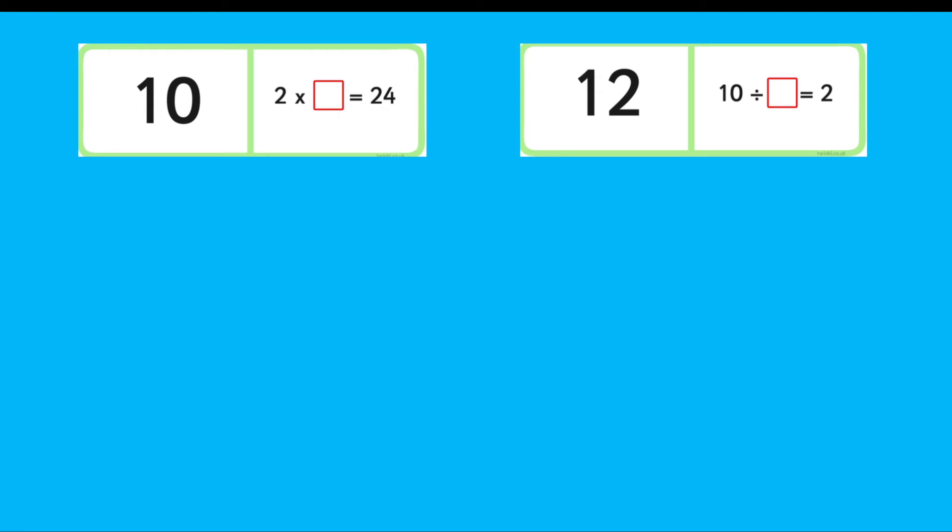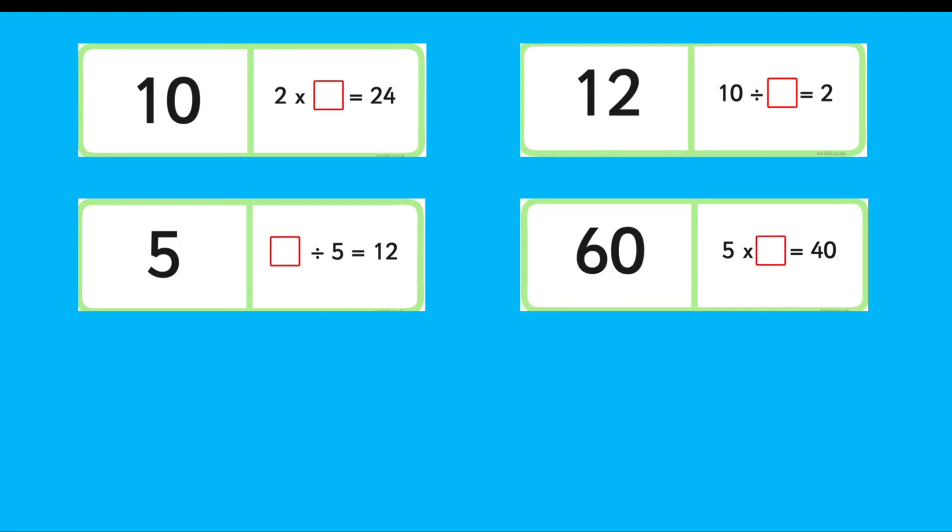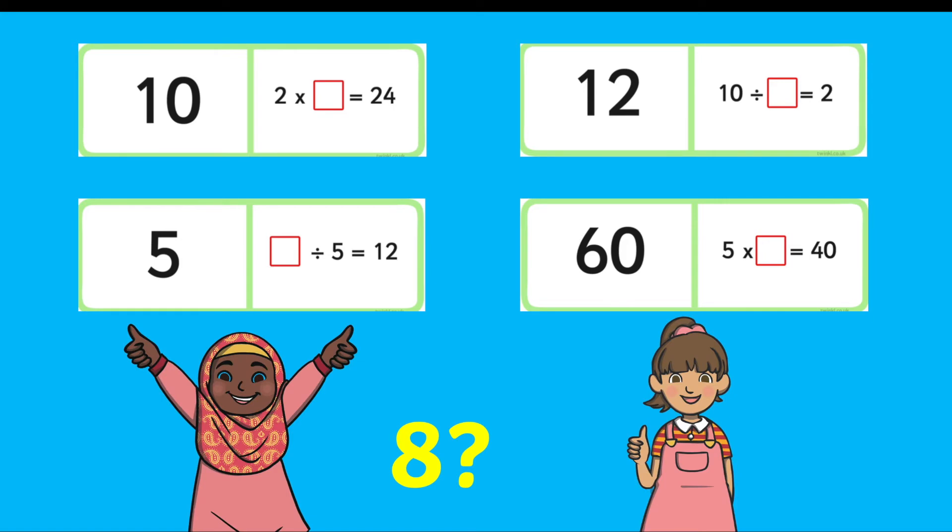Ten divided by something equals two and so on until the loop ends. You can get the whole class involved in this, ensuring each child is practicing their times tables even though they're not involved in that exact question. By having the class raise their hand, showing a thumbs up or down to show if they agree with the answer.